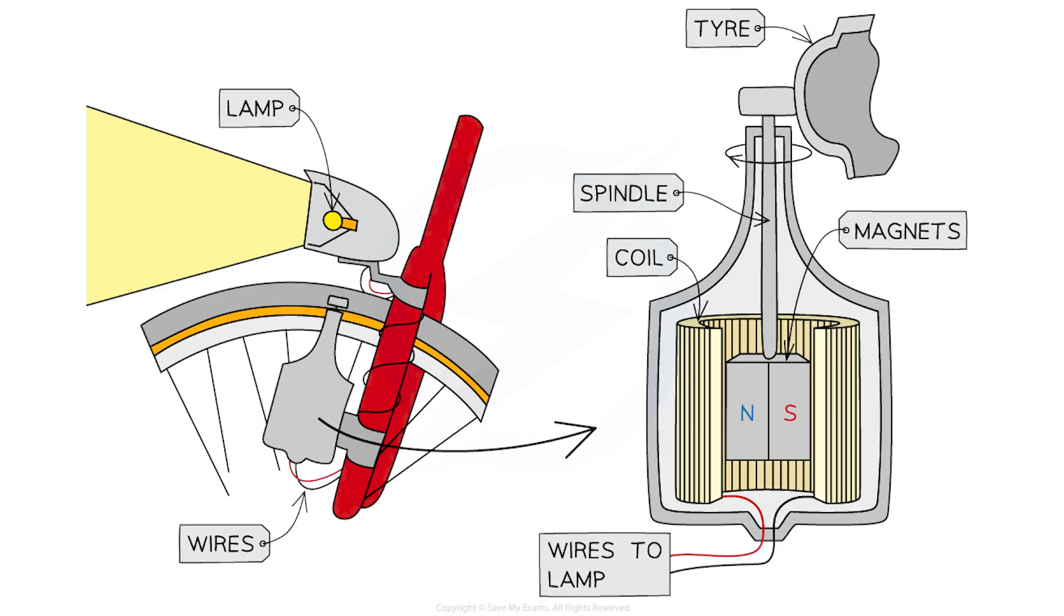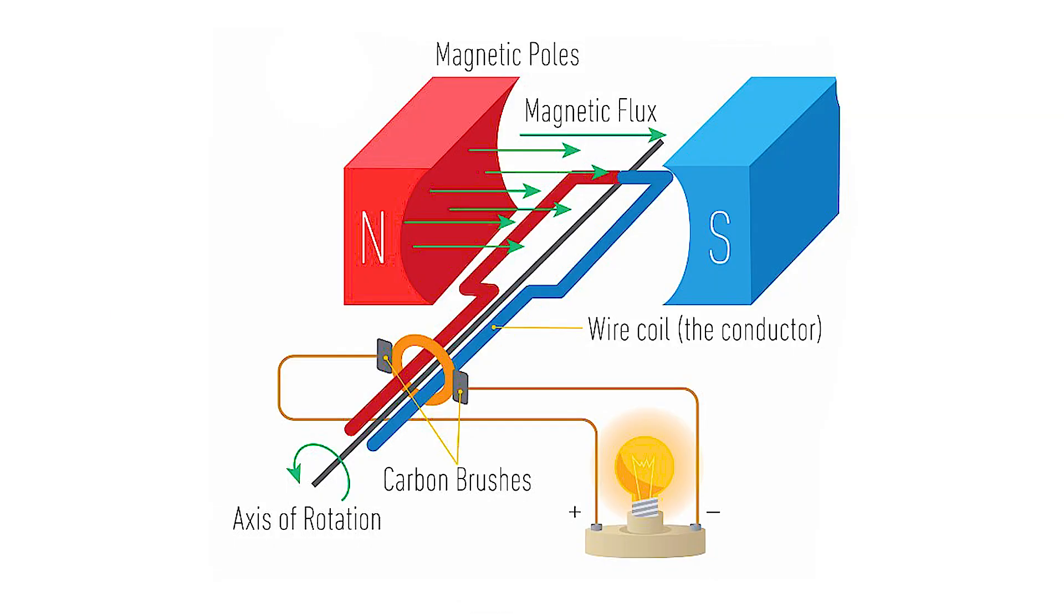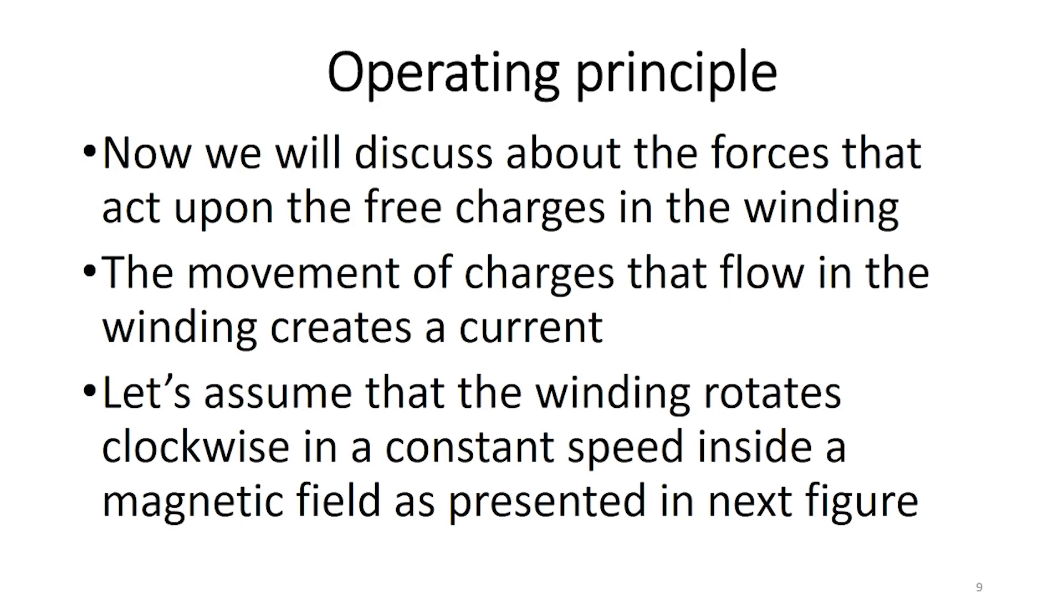The two essential components of a generator are the magnetic field, and conductors that move in that magnetic field. Now, we will discuss the forces that act upon the free charges in the winding. The movement of charges that flow in the winding creates a current.